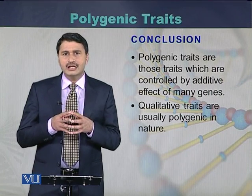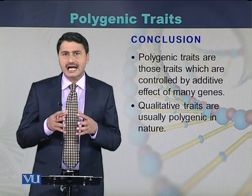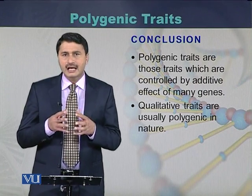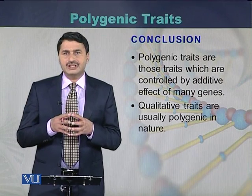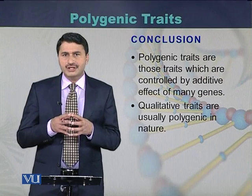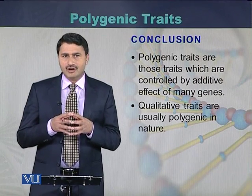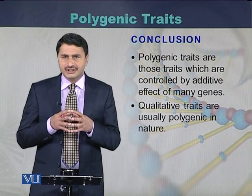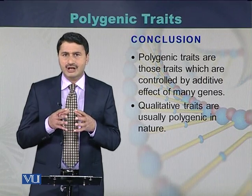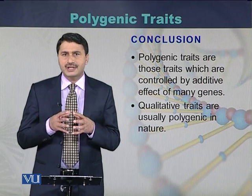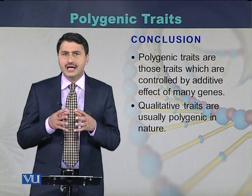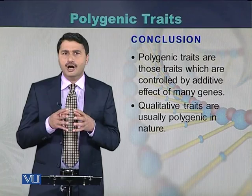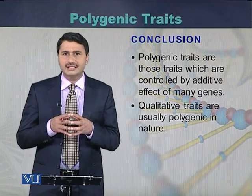Usually the qualitative traits like height, human eye color, and skin pigmentation in humans — these traits are called qualitative traits, and qualitative traits are controlled by multiple genes. This phenomenon is called polygenic traits or polygenic inheritance.